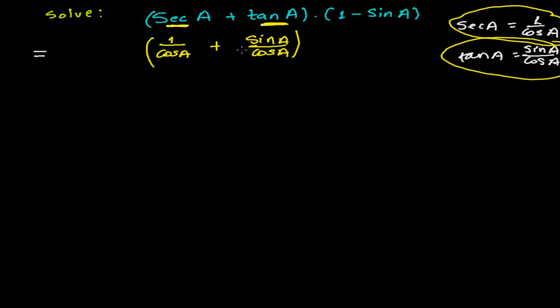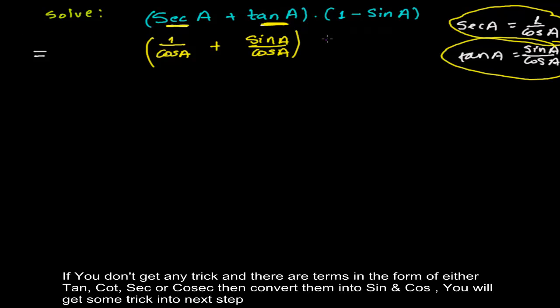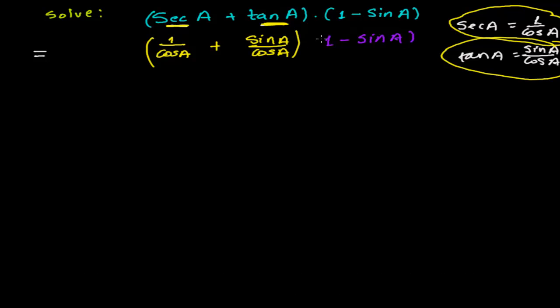As I said, whenever you're getting anything and no concept is coming to mind, try to convert everything into sine and cosine. Automatically every concept will come one by one. For 1 minus sin A, I'm not going to change it because it's already in sine form.